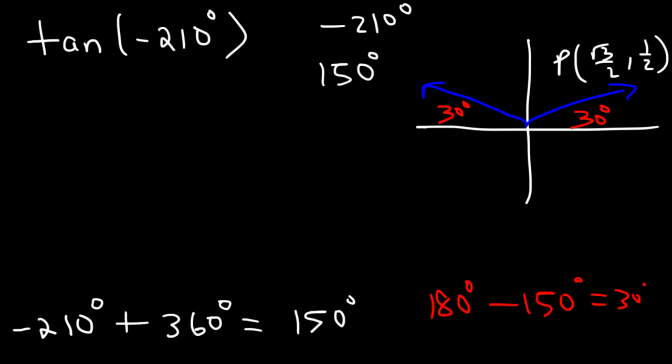Go ahead and try cotangent of 180 and cotangent of 3pi divided by 2. 180 is on the negative x-axis and 3pi over 2 (which is 270) is on the negative y-axis. The point for 180 is (−1, 0) and for 270 it's (0, −1). Cotangent is x divided by y. For cotangent of 180: x is −1, y is 0, so it's −1 over 0 — cotangent of 180 is undefined. For cotangent of 3pi over 2: x is 0, y is −1, so cotangent is 0.